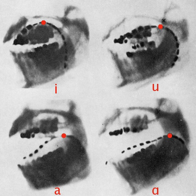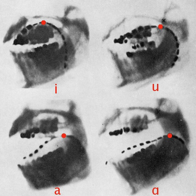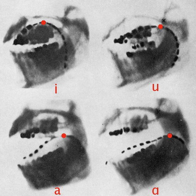Affricates and co-articulated stops are represented by two letters joined by a tie bar, either above or below the letters. The six most common affricates are optionally represented by ligatures, though this is no longer official IPA usage, because a great number of ligatures would be required to represent all affricates this way. Alternatively, a superscript notation for a consonant release is sometimes used to transcribe affricates.